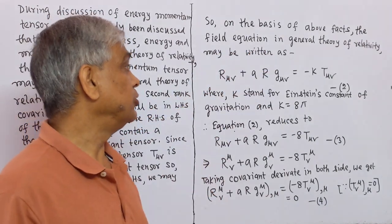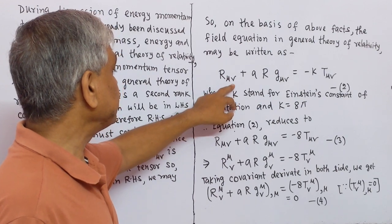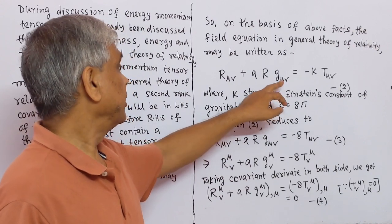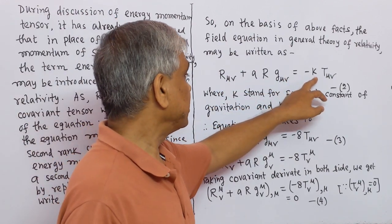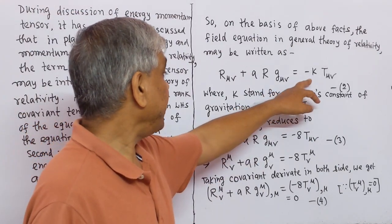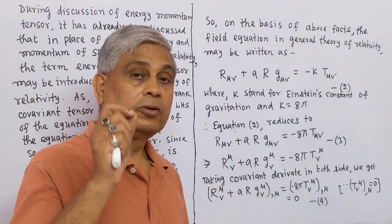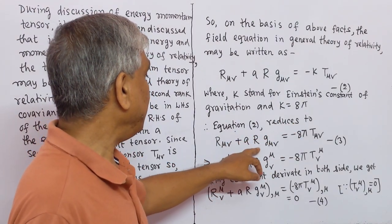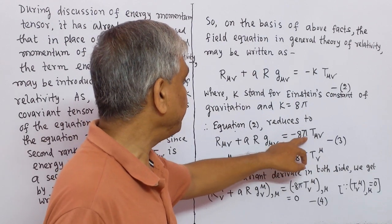Based on the above reasoning, the field equation in general theory of relativity may be written as: R_μν + aRg_μν = -κT_μν, where a and R are constants related to the Ricci tensor, g_μν is the metric tensor, and T_μν is the energy-momentum tensor. Here κ is the Einstein constant of gravitation, and κ = 8π. Therefore the equation reduces to: R_μν + aRg_μν = -8πT_μν.